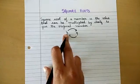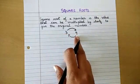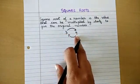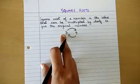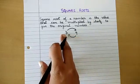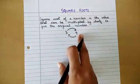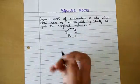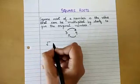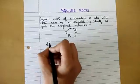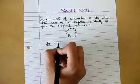Suppose 3 is the number and the square becomes 9. So the square root of 9 will always be 3, because when 3 is multiplied by itself it gives 9. A square root of a number is denoted by the radical symbol. So the square root of 9 is 3.